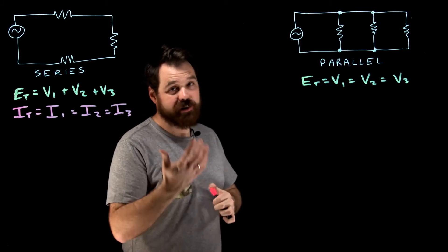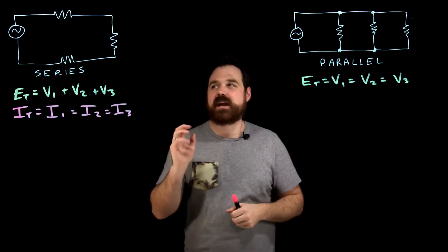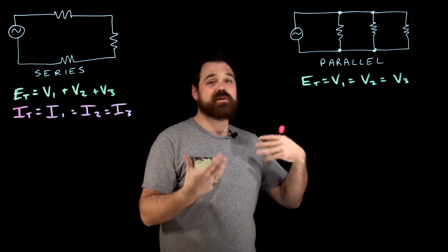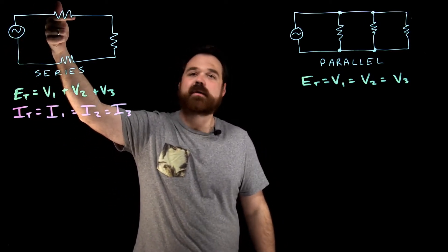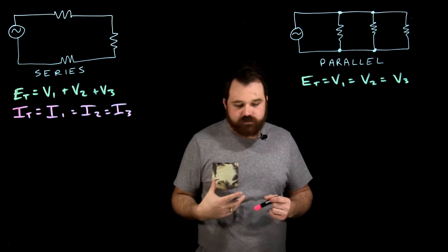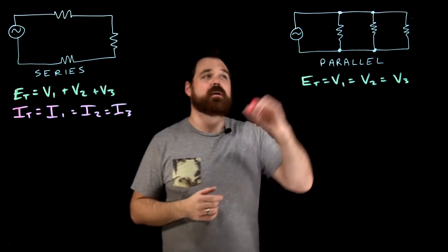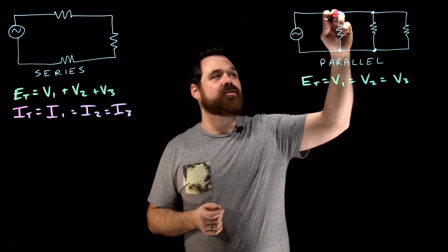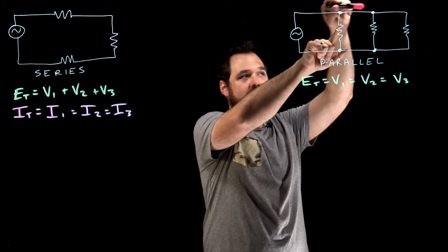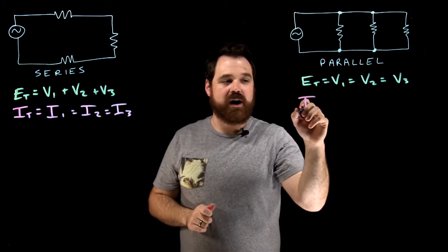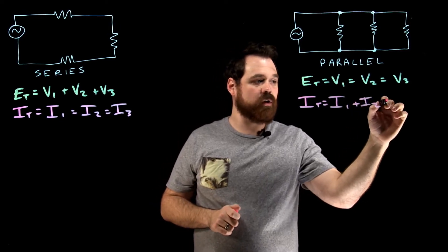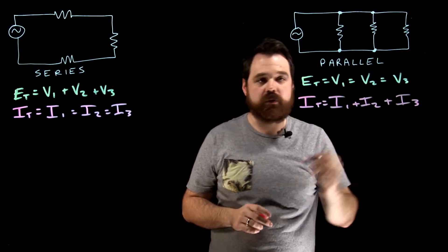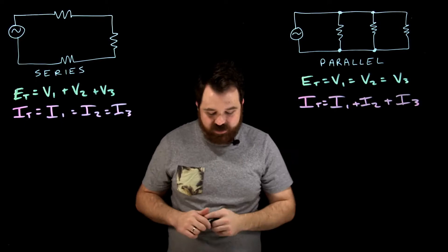Kirchhoff's current law says that all current entering a node is the same as the current leaving that node. If I'm entering resistor one, it's going to be the same as my current leaving resistor one. Coming into our parallel, all current entering this node must be the same as the current leaving that node. So I total equals I1 plus I2 plus I3. That's how our current adds up in that circuit.